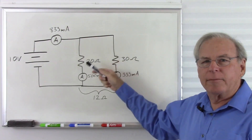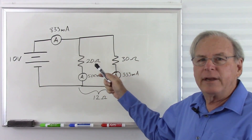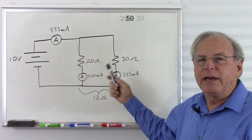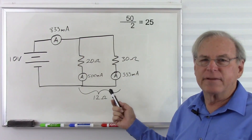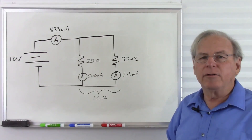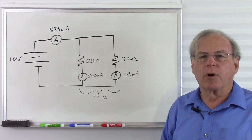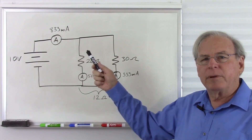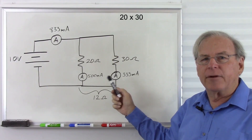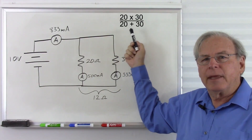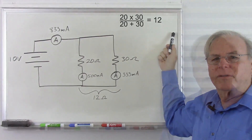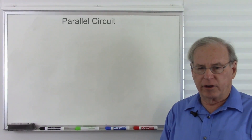Obviously we can't just add them together like a series circuit. Let's see if we can take an average — 20 plus 30 is 50, divide by 2 and we get 25. That doesn't work. So how do we calculate resistors in parallel? We use a method called product over sum. We multiply the two resistors together — that's 20 times 30 — then we add them together, 20 plus 30, then we take that product, divide it by the sum, and we get the resistance.